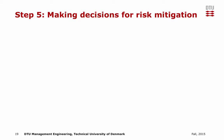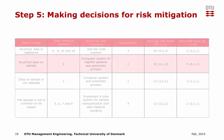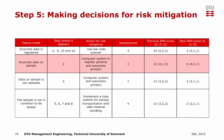In step 5, the decisions for risk mitigation are made. Taking the second failure mode — incorrect data on sample — as an example, the action for risk mitigation is to make use of a computer system to register patients and have automatic printers. This avoids direct human interaction with the transfer of data, reduces the RPN score vastly, and the new score becomes 4.